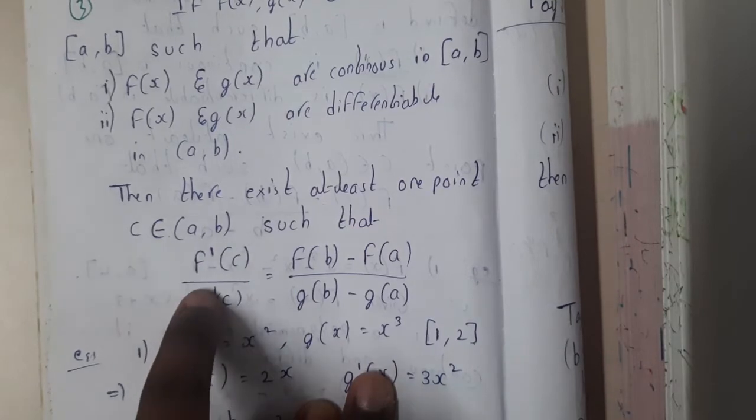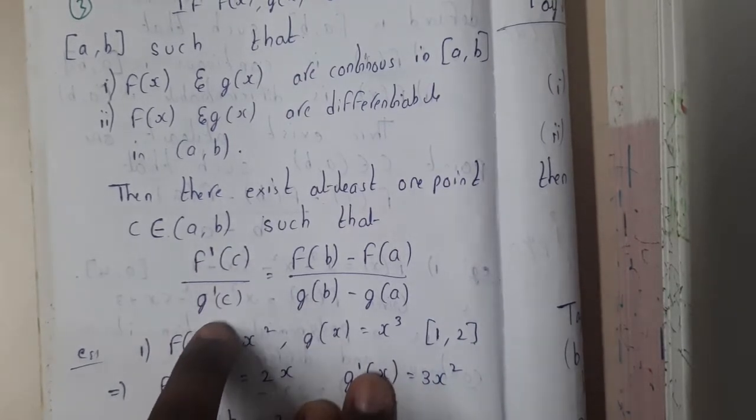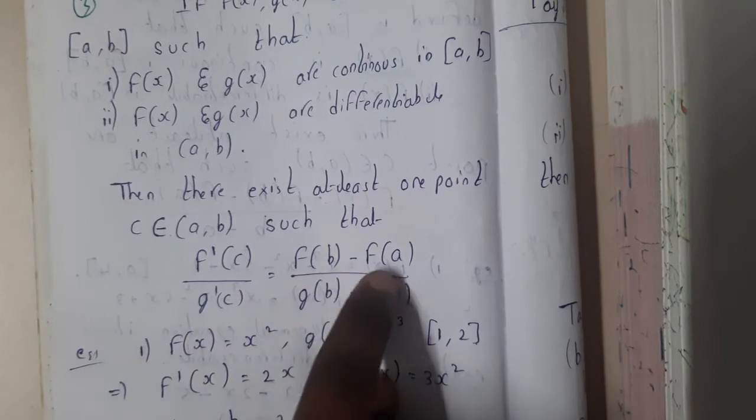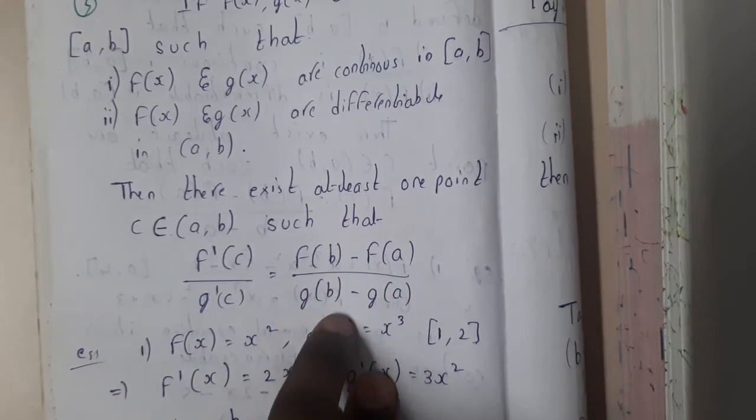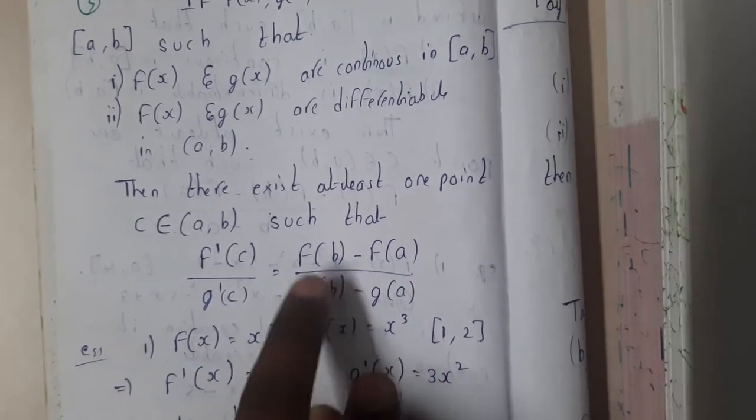Then we'll be calculating the formula for at least one point such that it belongs in between a comma b, and f dash of c by g dash of c is equal to f of b minus f of a by g of b minus g of a. I hope everyone is now clear with this formula.